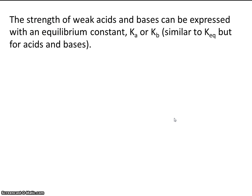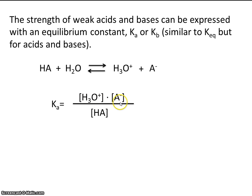The strength of weak acids and weak bases can be expressed with an equilibrium constant, Ka or Kb, similar to Keq, but for acids and bases. So once again, if we have a reaction where an acid is going to be donating a proton to water, these two would be the products, and these would be the reactants. And we could set up an equilibrium expression for this reaction. The concentration of the products divided by the concentration of the reactants.